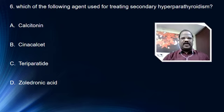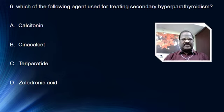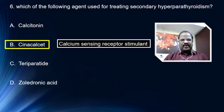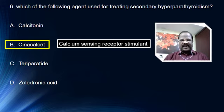Question number 6: which of the following agents is used for treating secondary hyperparathyroidism? Options are calcitonin, cinacalcet, teriparatide, and zoledronic acid. The right answer is option B, cinacalcet. Cinacalcet is a newer drug acting as a stimulant of the calcium-sensing receptor in the parathyroid gland, thereby controlling the release of parathormone, so it is useful for treating secondary hyperparathyroidism.